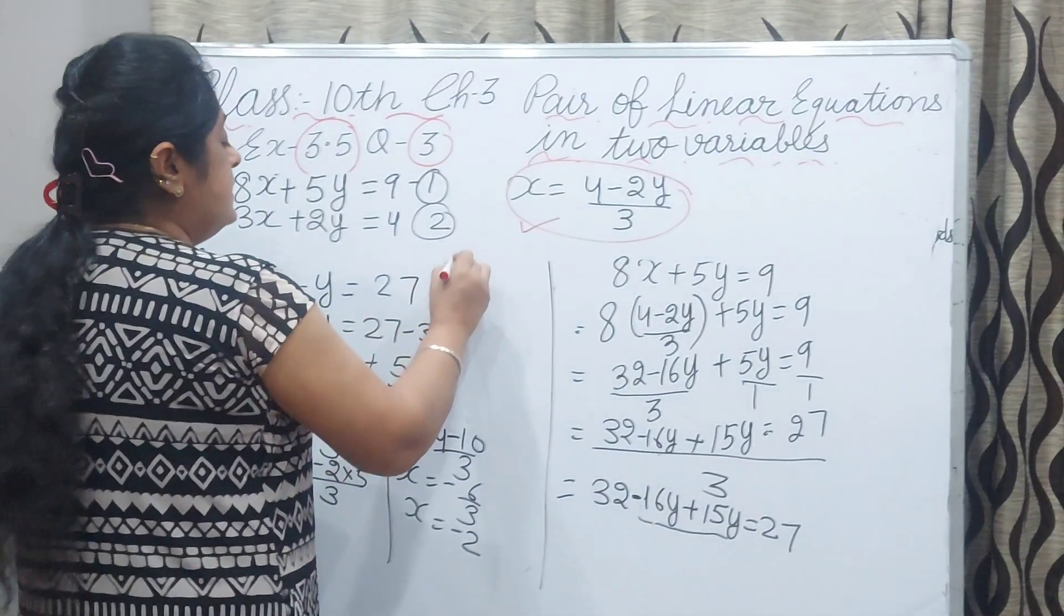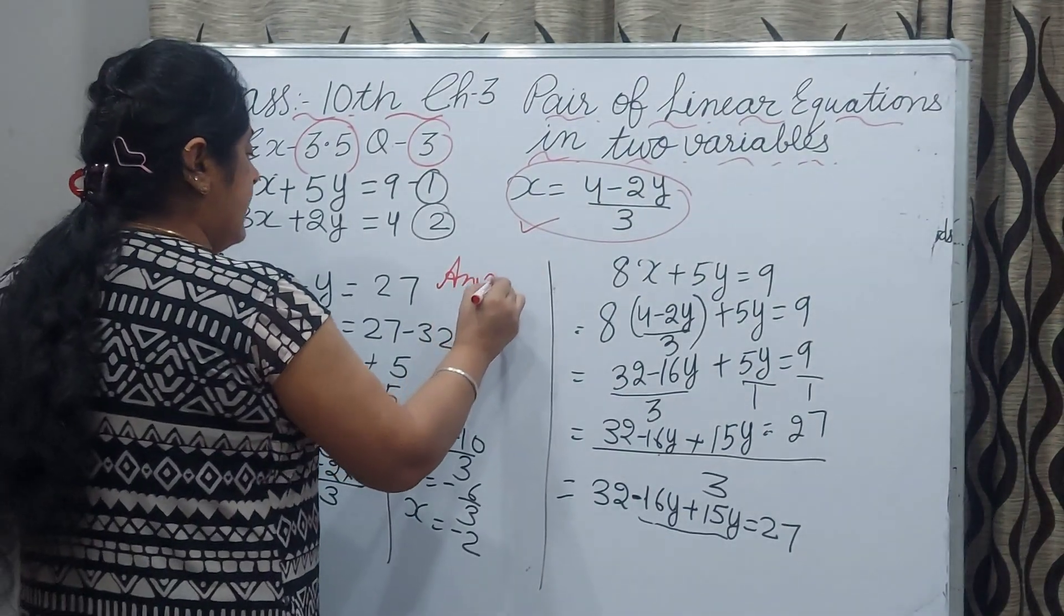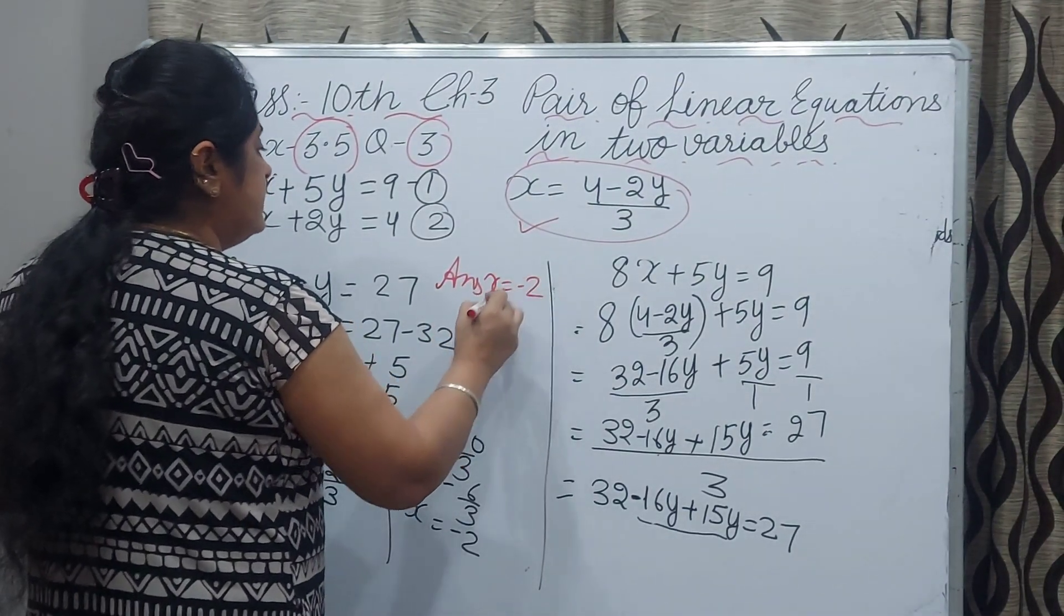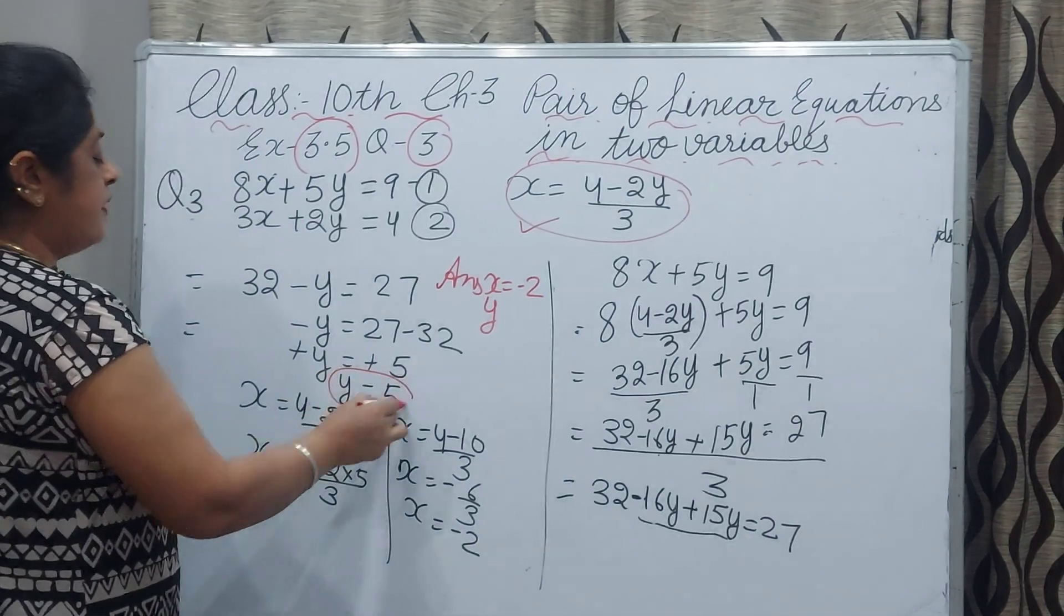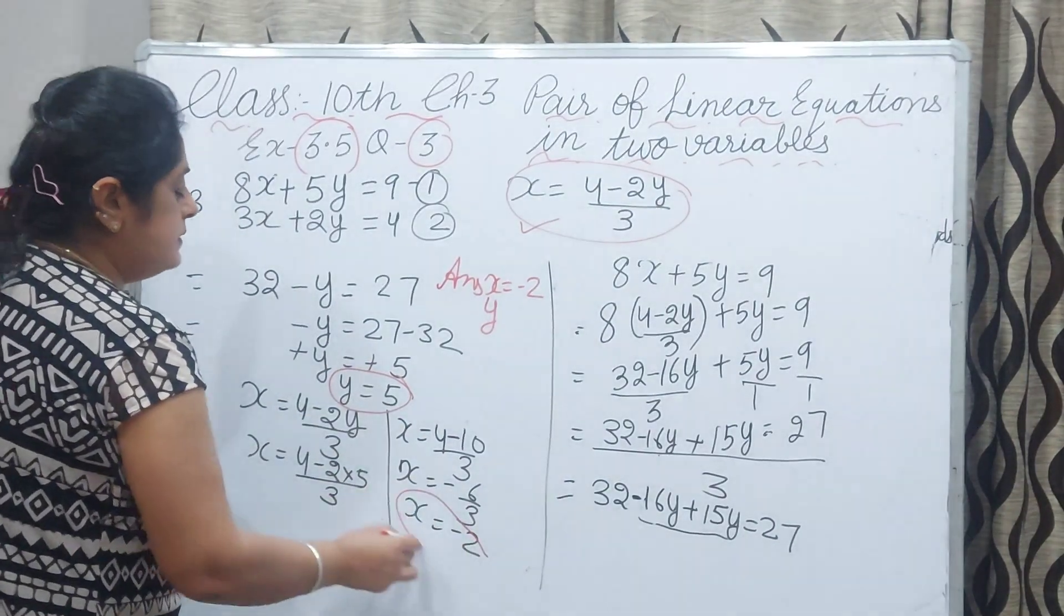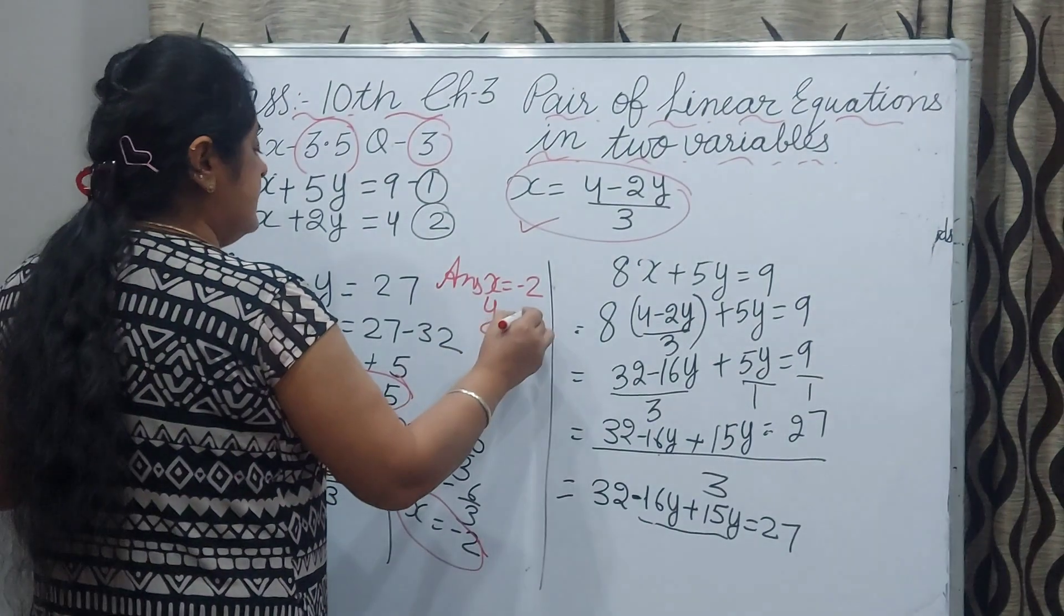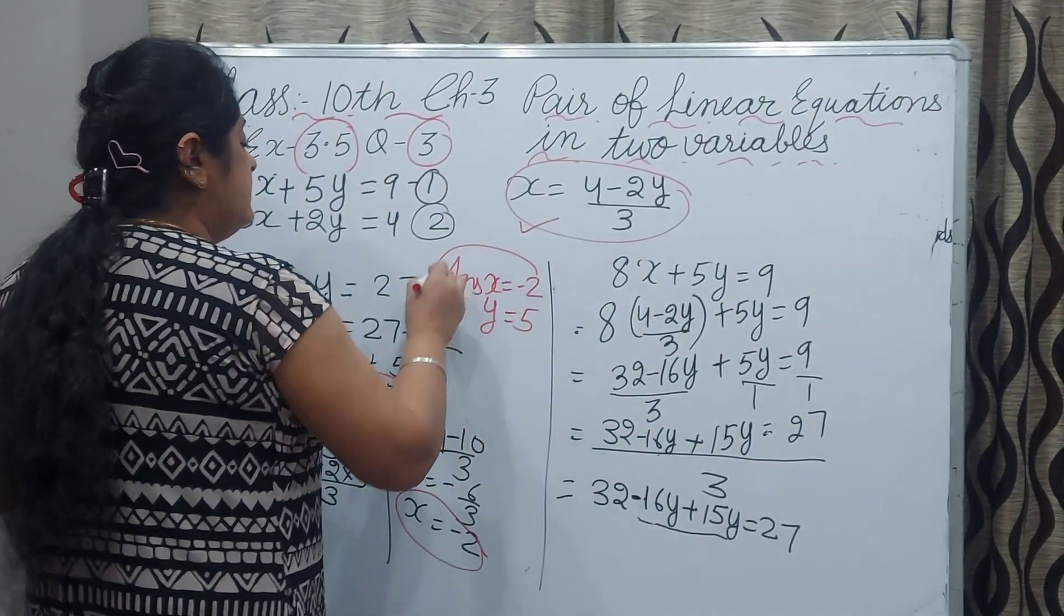x equals minus 6 by 3 and x value will be minus 2. Now our answer is x value is minus 2 and y value is 5. That is your answer.